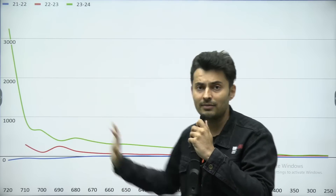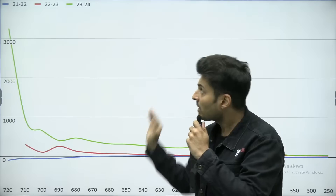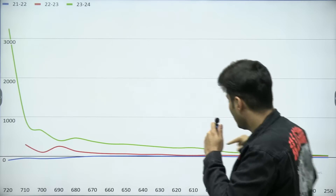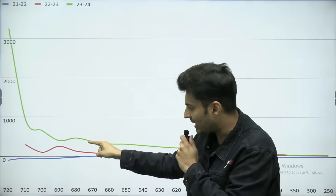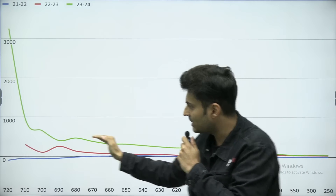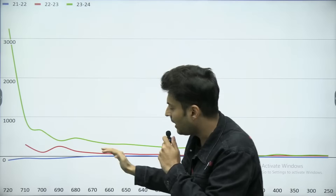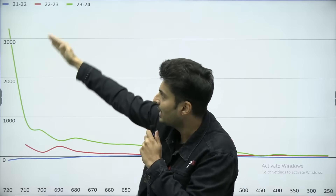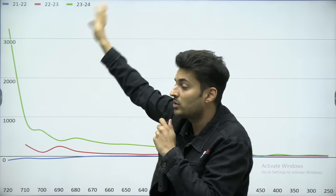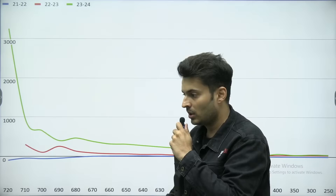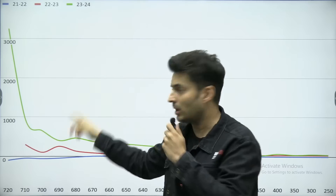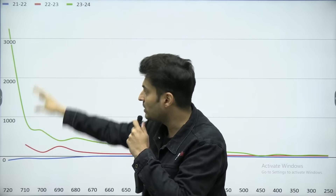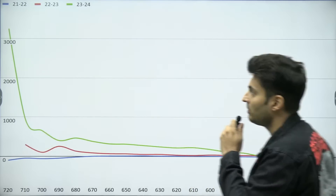But in 2023 to 2024, this graph is fine till around 680 or 670 marks, but it starts jumping really high above 680 — going up to 3000% and above. What people thought is: if this has happened, that means paper leak is for sure. How can this graph jump 1000%, 2000%, 3000%?